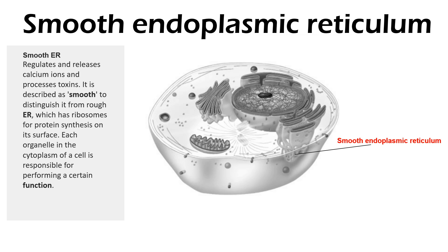The smooth endoplasmic reticulum — also called smooth ER — regulates and releases calcium ions and processes toxins. It is described as smooth to distinguish it from rough ER, which has ribosomes for protein synthesis on its surface. Each organelle in the cytoplasm of a cell is responsible for performing a certain function.